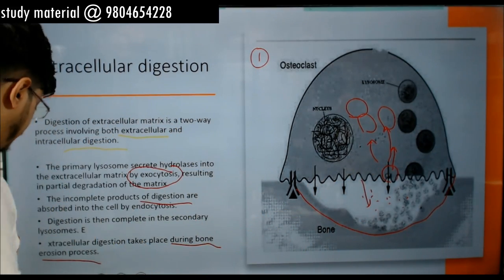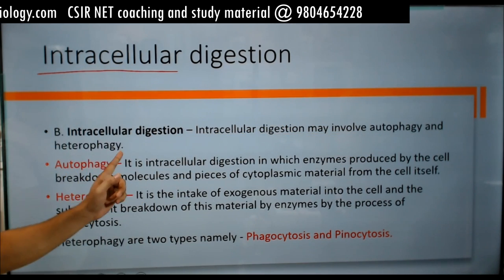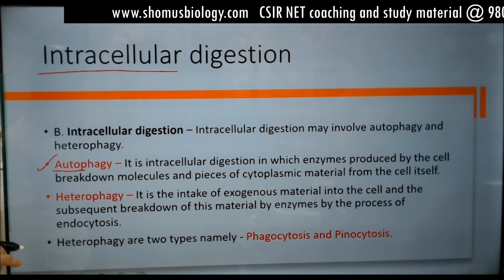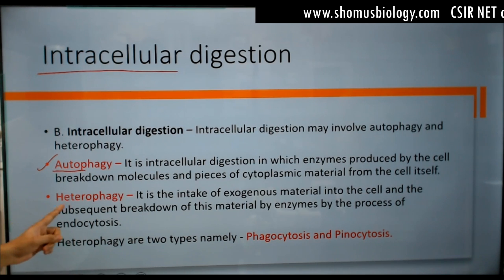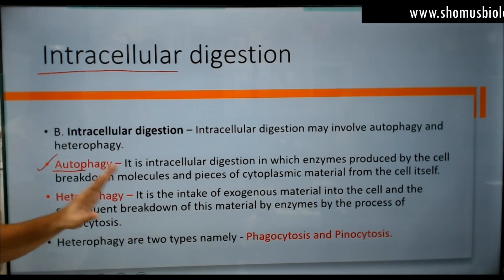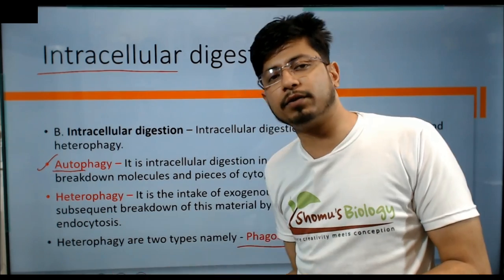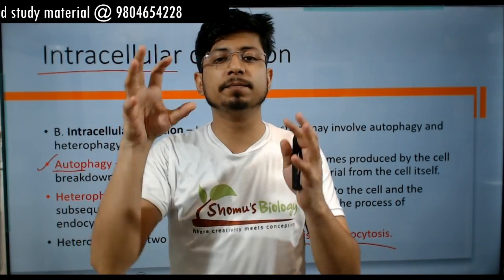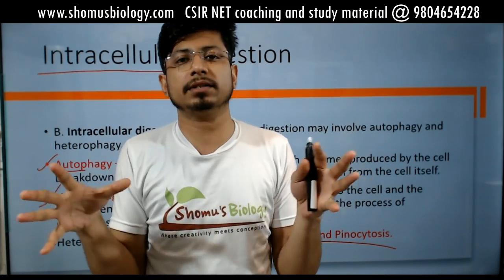Intracellular digestion may involve autophagy or heterophagy. Autophagy is intracellular digestion where enzymes produced by the cell are released inside the cell to kill itself — 'auto' means self, 'phagy' means eating. Heterophagy is the intake of exogenous materials and their subsequent breakdown by enzymes. Heterophagy can be phagocytosis (engulfing large solids like bacteria) or pinocytosis (taking in liquids).